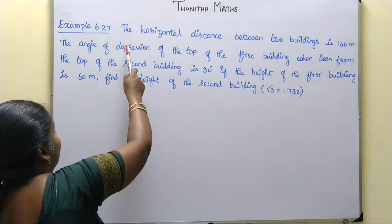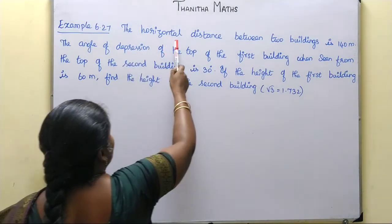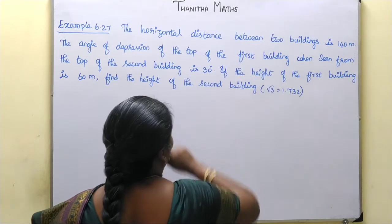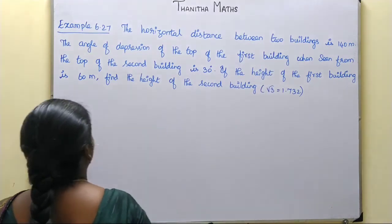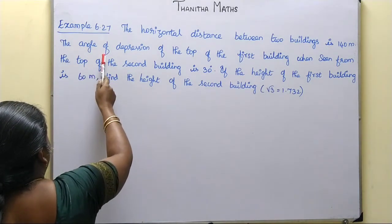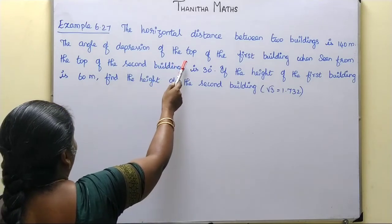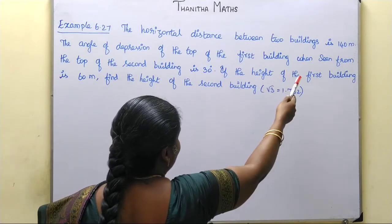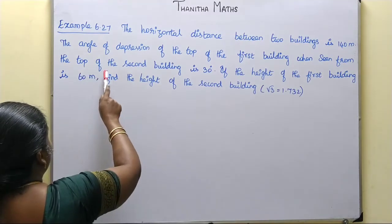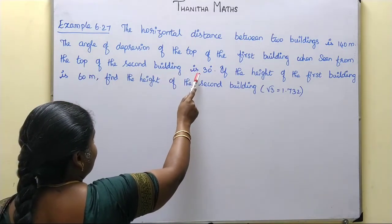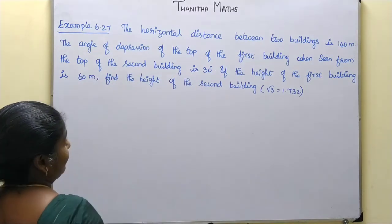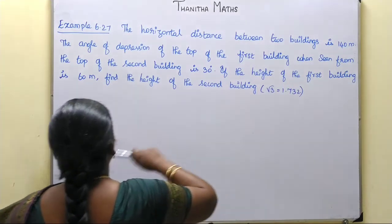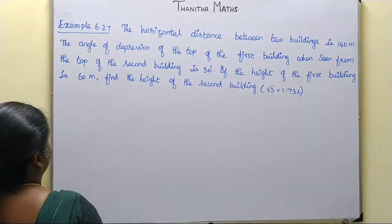The horizontal distance between two buildings is 140m. The angle of depression of the top of the first building, when seen from the top of the second building, is 30 degrees. The height of the first building is 60m.